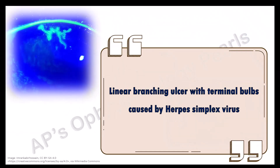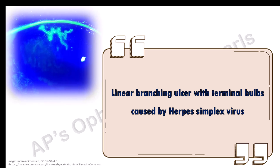A dendritic ulcer, or dendritic epithelial keratitis, is a linear branching ulcer with terminal bulbs caused by herpes simplex virus. Herpes simplex viral keratitis is the most common source of infectious blindness in the western world. It is caused by herpes simplex virus 1, and very occasionally by herpes simplex virus 2. It usually occurs in the recurrent form of ocular herpes and contains live virus.